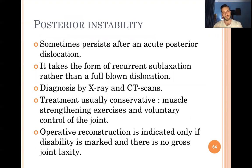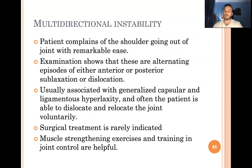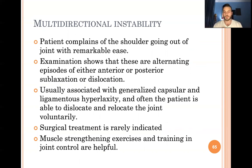Posterior dislocation is rare (about 5%), typically caused by direct trauma, electrical shock, or epileptic seizures. It can be diagnosed by X-ray (light bulb sign) or CT scan. Treatment is strengthening exercises conservatively; surgical reconstruction is reserved for marked instability. For multidirectional instability, patients typically have ligamentous hyperlaxity, often present with bilateral shoulder instability, and surgery has a high failure rate. The most important treatment is physiotherapy to strengthen the muscles around the shoulder for stability.